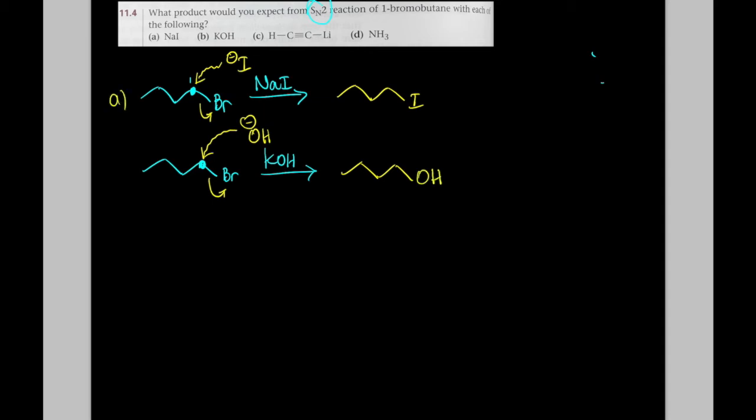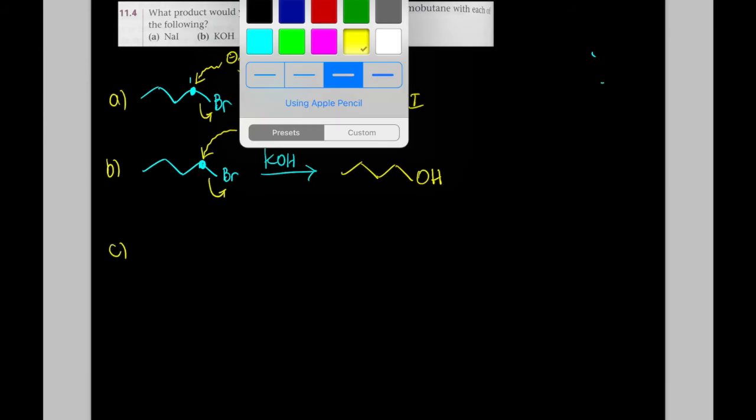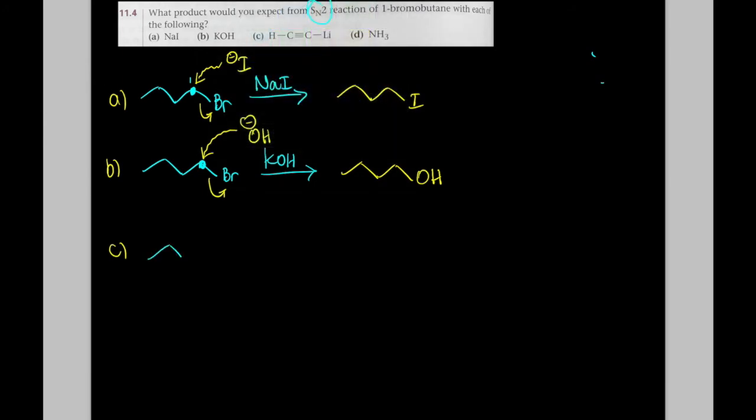In problem C, we have an acetylide ion. If you haven't seen it before, it might be kind of confusing. So let me draw it out carefully. We have this alkyne, and then we have a bond, and then we have lithium.